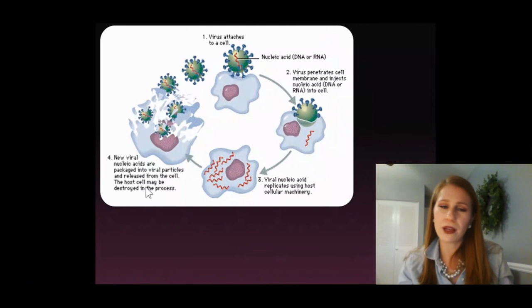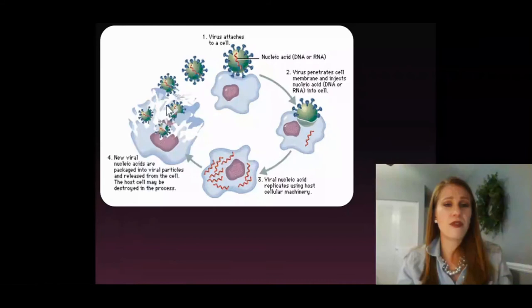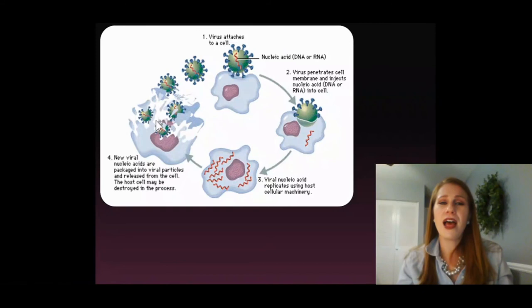Here is a quick recap. Our virus attaches to a cell. It's going to inject the DNA or RNA inside. That DNA or RNA is replicated. Your cells end up being a little factory and they're going to produce a lot of viruses. And then those brand new viruses are going to burst out of your cell killing it. You'll notice it's a cycle — those new viruses, now that there are hundreds or thousands or even millions of them, they're going to go and infect other cells.